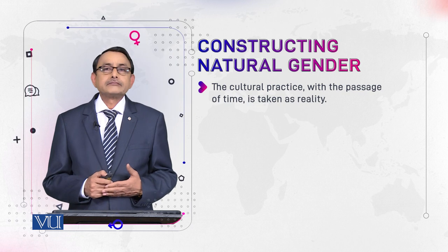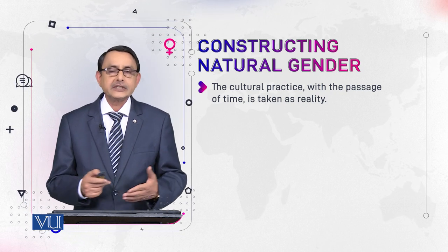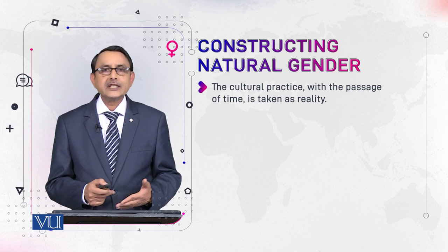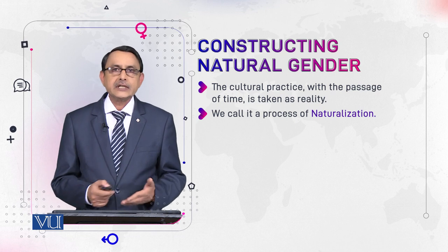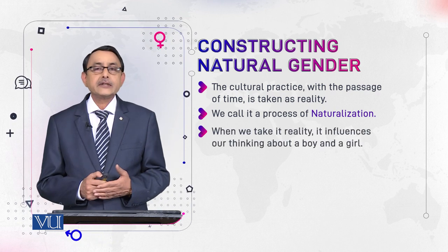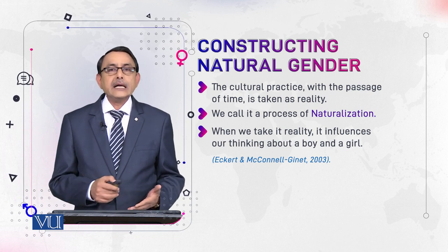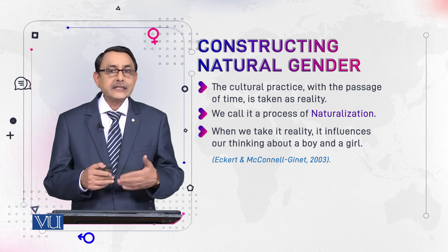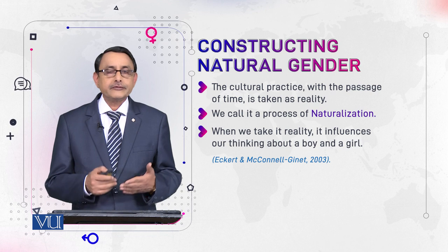The cultural practice with the passage of time is taken as reality. I said these are not actual meanings of these colors, but when it happens over the years and over generations, people take them as the real meaning. This process of making things real through cultural practices is called naturalization. When we take color coding as reality, it influences our thinking about a boy and a girl. This naturalization gradually grips and controls our conception of a girl and a boy.